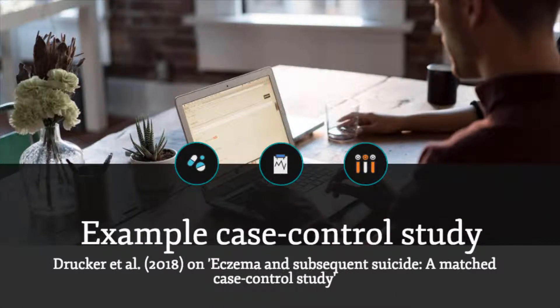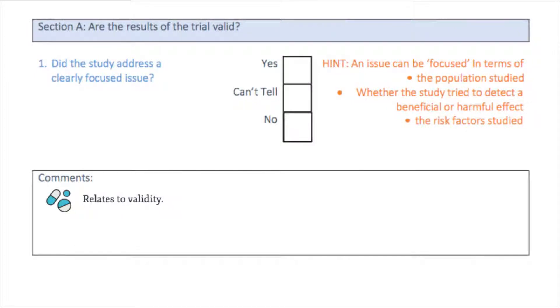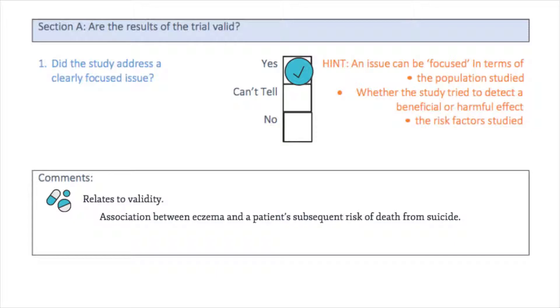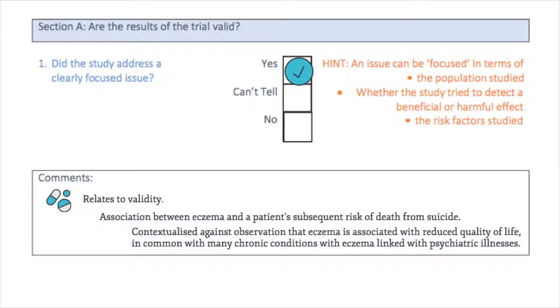We'll have a look at this checklist and apply its use to a sample case control study by Drucker et al. 2018 on eczema and subsequent suicide — a matched case control study, the link to which is also below this video. The first question in the checklist is to consider whether the case control study examined a clearly focused question. The answer for this study would appear to be yes, as the authors considered the association between eczema and a patient's subsequent risk of death from suicide. They contextualised this research question against the observation that eczema is associated with reduced quality of life, and that previous research has linked eczema with psychiatric illness.